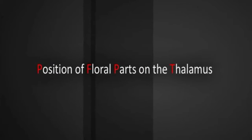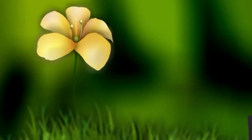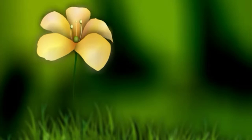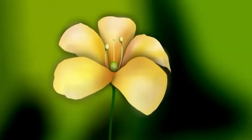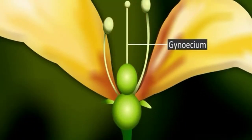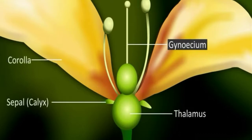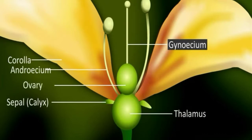The position of floral parts on the thalamus varies in various flowers. Flowers are divided into different groups on the basis of the position of the gynoecium on the thalamus in relation to other floral parts. In hypogynous flowers, the gynoecium is present at the tip of the thalamus. The remaining floral parts — calyx, corolla, and androecium — are arranged at the base of the gynoecium. In this flower, the ovary is positioned completely outside the thalamus, so it is called a superior ovary.